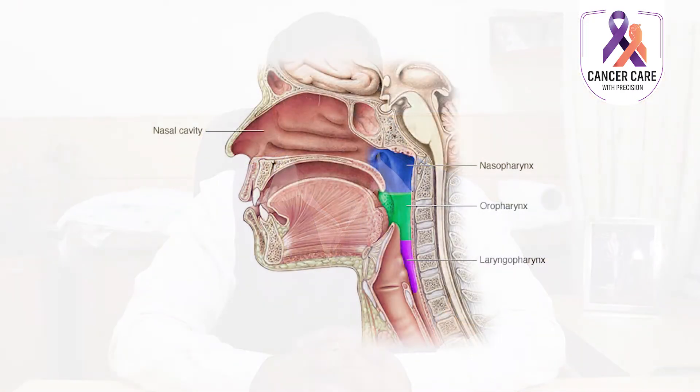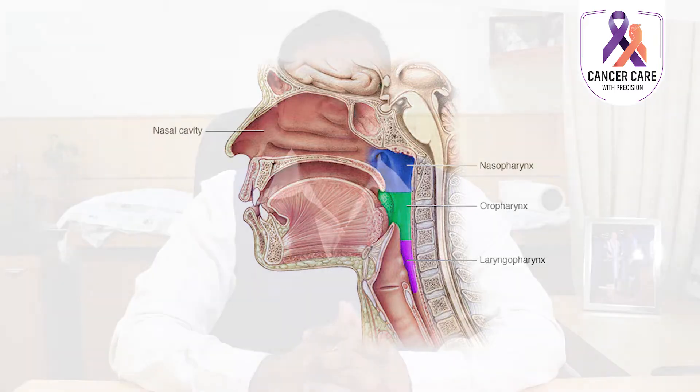Nasopharynx is the part of the pharynx or throat which lies behind the nose, and any cancer involving the nasopharynx is called nasopharyngeal cancer. The commonest type of nasopharyngeal cancer is squamous cell carcinoma.